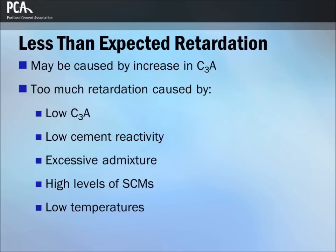If the length of retardation is less than expected, this may be due to an increase in the C3A content of the cement. Abnormally retarded set may be caused by low C3A content or low cement reactivity, excessive admixture with retarding properties, high levels of SCMs, or low temperature. The performance of concrete produced with cements of abnormally low C3A and SO3 content should be carefully observed when water reducing or set retarding admixtures are used. Any changes in the alkali content of the cement should alert the concrete producer to potential changes in admixture performance.